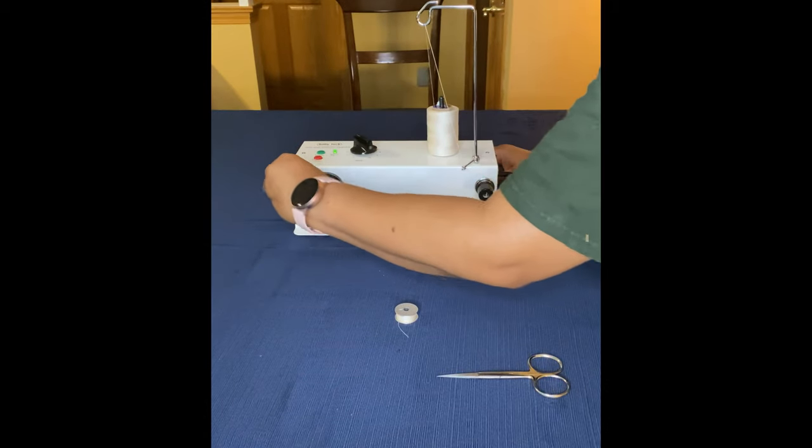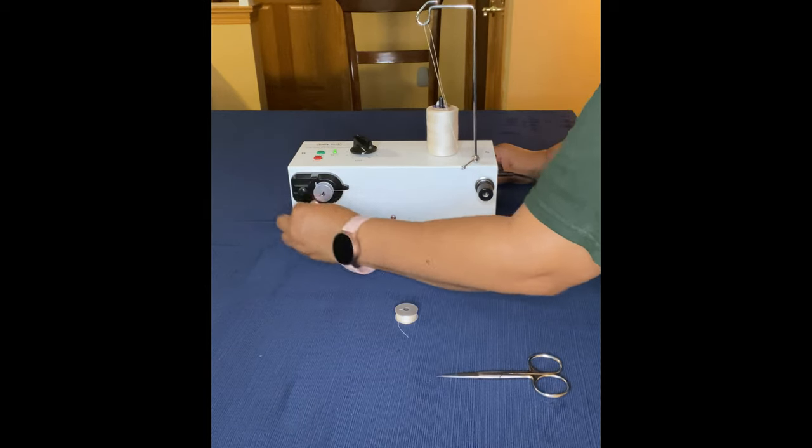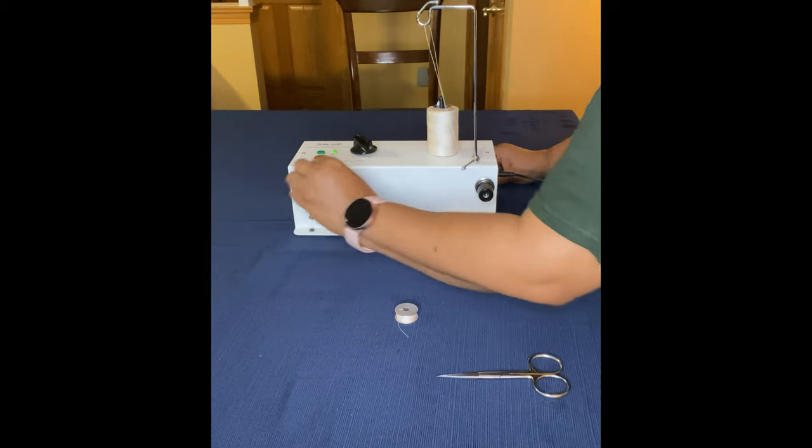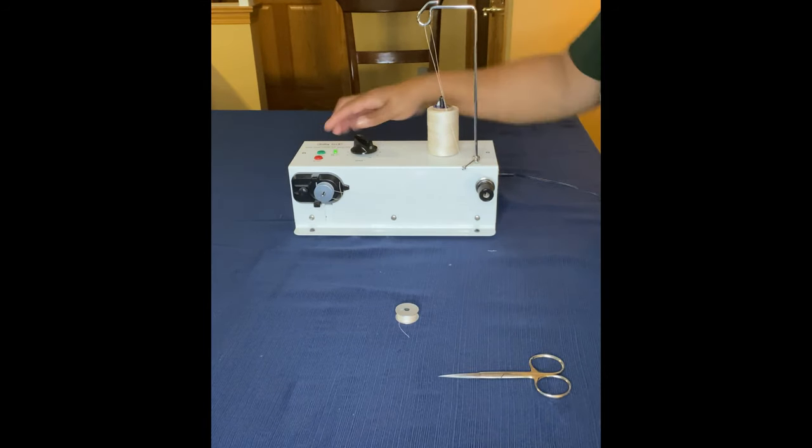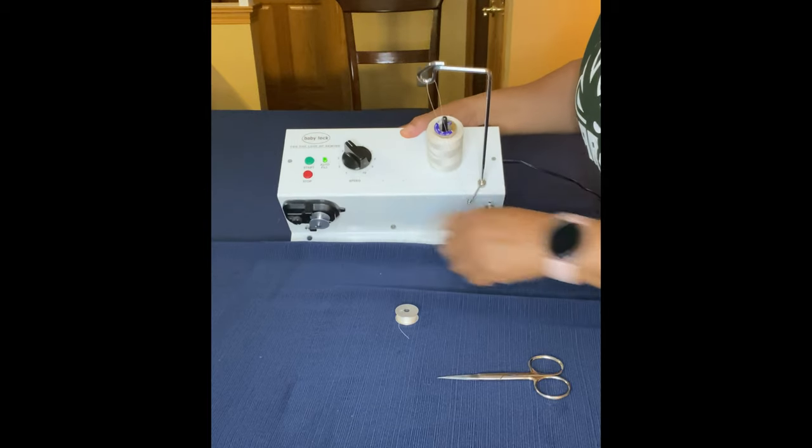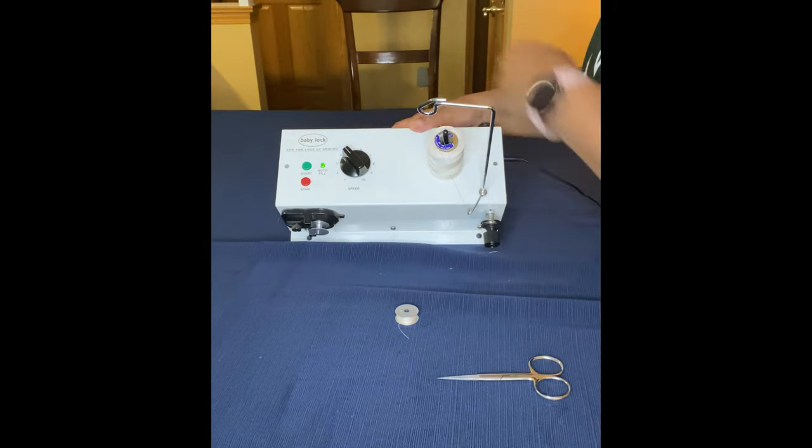With your thread, you're gonna wrap it about four to five times counterclockwise just to get the thread started. Then on top of the bobbin winder, you'll have your start and stop buttons and your speed knob. I set my speed at about 4.